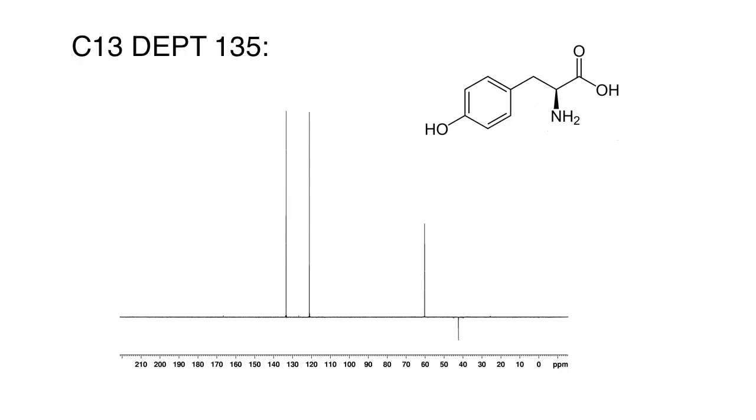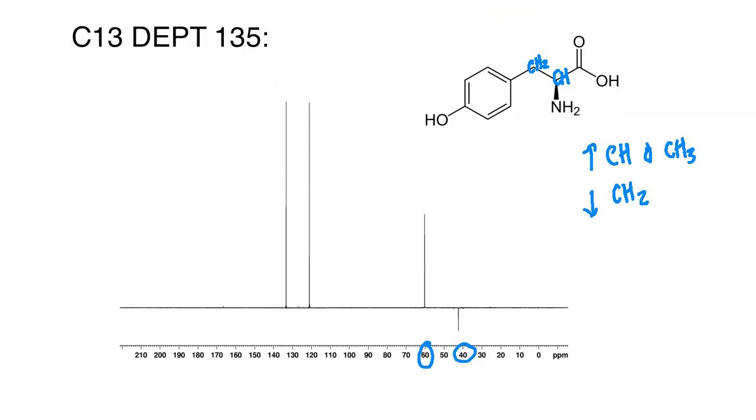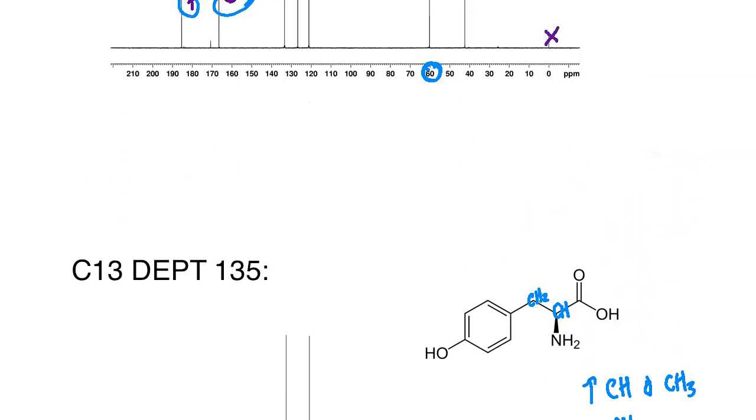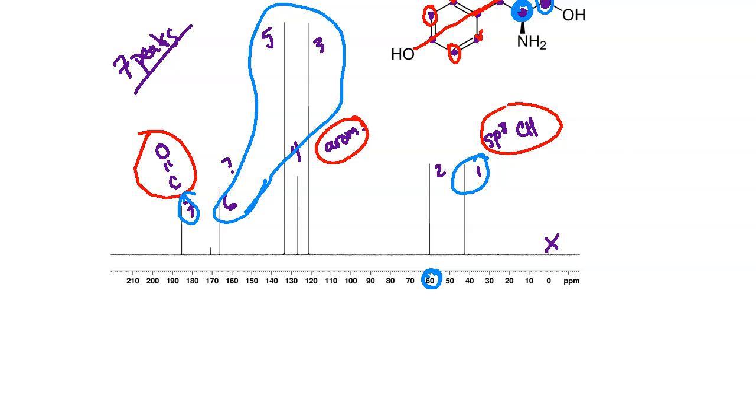What might be of interest here is if we take a look at the DEPT-135, we can see some of these peaks that still hang out here, some of them have vanished, and one of them has inverted. We know that the one around 60, which we just discussed, would be this CH group right here. That makes sense that it is still in the same position - it is upright because in a DEPT, the CH and the CH3 groups are going to appear upright, and the CH2s are going to be inverted on the bottom. We also mentioned we had this CH2 here - that was the other hydrocarbon. Sure enough, this peak at 40, which was this one right up here, has inverted itself. That's because it belonged to that methylene group.